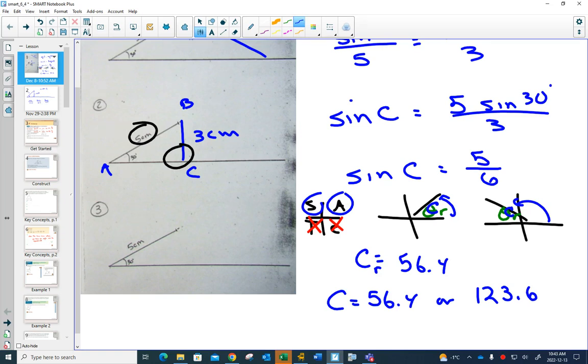And I want you to notice, if this is 56.4 or 123.6, do you see that they both still work? In fact, the 56.4 one, I'll draw it on here, would match up with that triangle. And the 123.6 one would match up with that triangle. And so we have two possible answers in that situation.